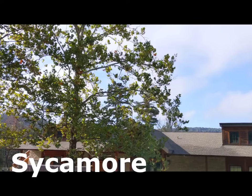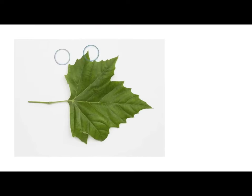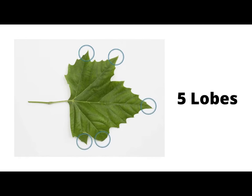The first tree we found was the sycamore. You can tell this is a sycamore tree leaf by the five distinct lobes. These leaves are green in color with a faded light green back.